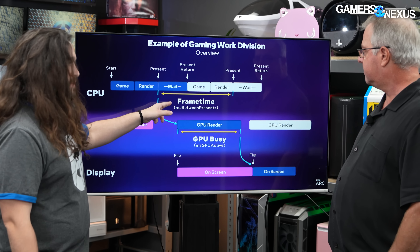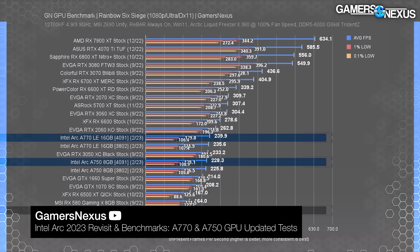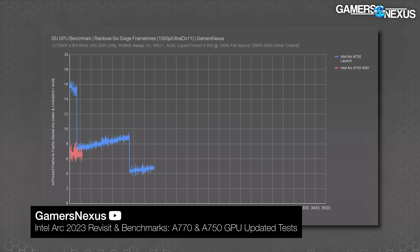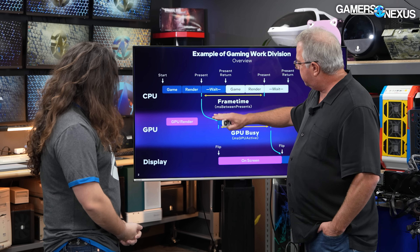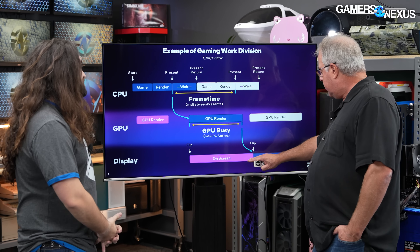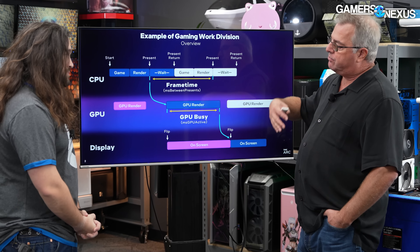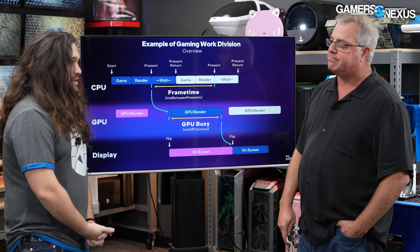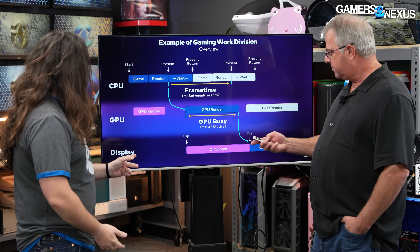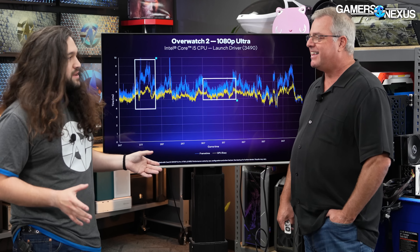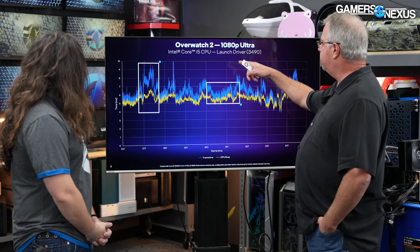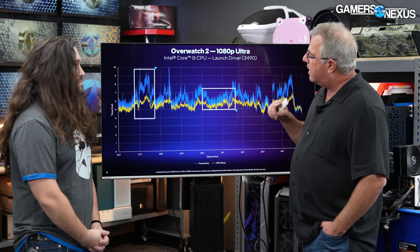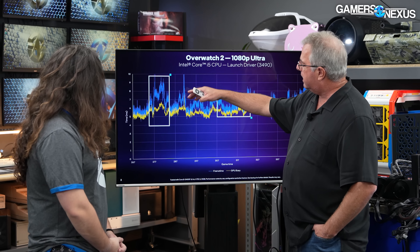Once everything is set to the DirectX pipeline there's a command called Present, which is the last thing the render does. Once Present is called, DirectX runs, the driver runs, does its compiling, and once all the commands are generated by the driver it sends them down to the GPU which actually begins to draw pixels and do all the mathematics. Then the game begins the next frame after a period of waiting. The key thing is that frame time is measured between these two Presents, which PresentMon already reports as milliseconds between Presents.